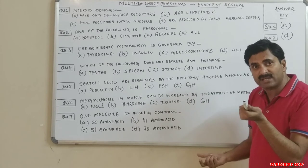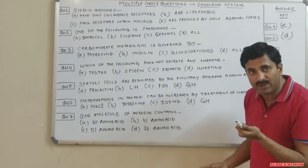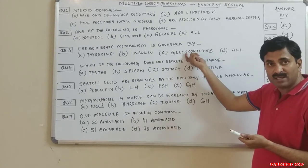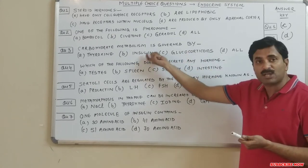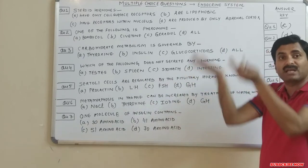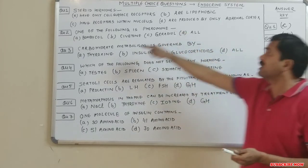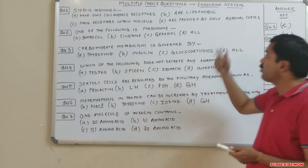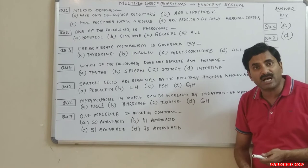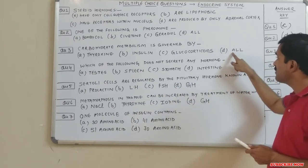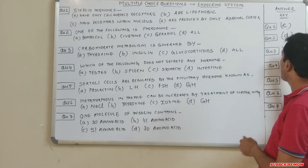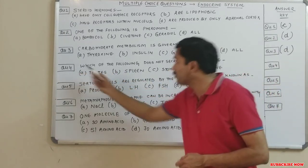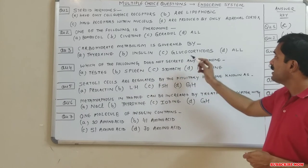Glucocorticoids are secreted by the adrenal cortex and are related to sugar levels — they increase blood sugar. Since sugar is a carbohydrate, thyroxine, insulin, and glucocorticoids are all concerned with carbohydrate metabolism. The answer for question three is D: all of the above.